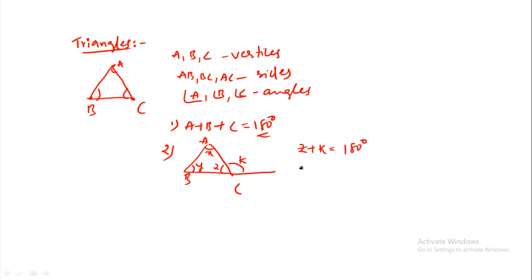The exterior angle of a triangle is equal to the sum of the opposite interior angles. For example, exterior angle k equals x plus y. This is very very important.